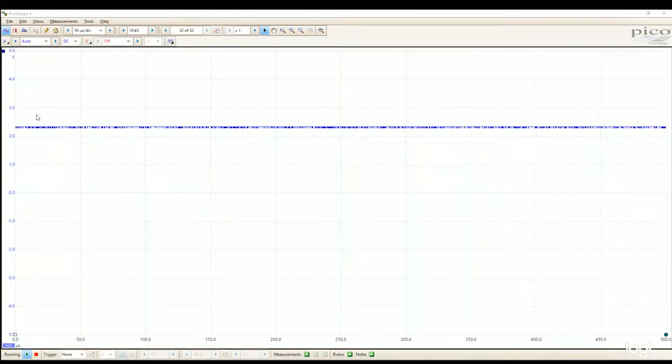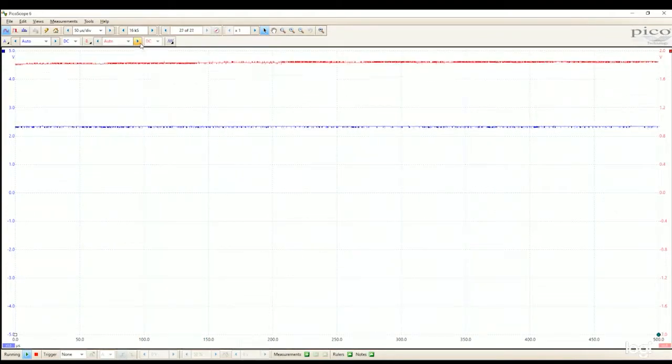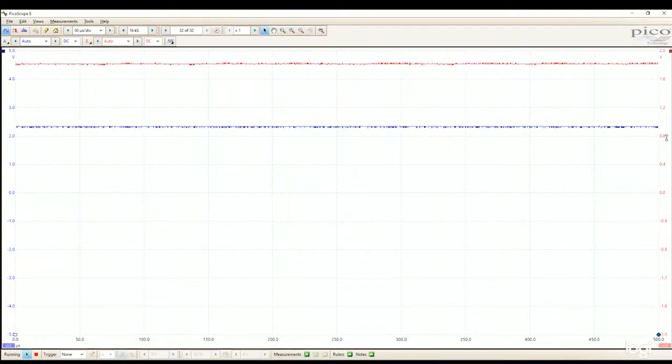So recall that we had both channels A and B connected. Channel A was our input, B was our output. So I could enable the channel B by turning that to auto. And the channel B scale reads from the right-hand side. So the red numbers are the B, and the blue numbers are the A. So it's important to make sure if your scales aren't the same that you're reading off the proper side there to get the measurements.